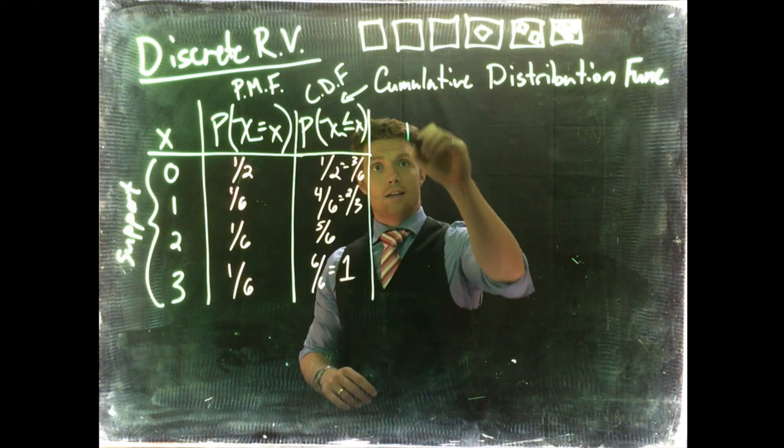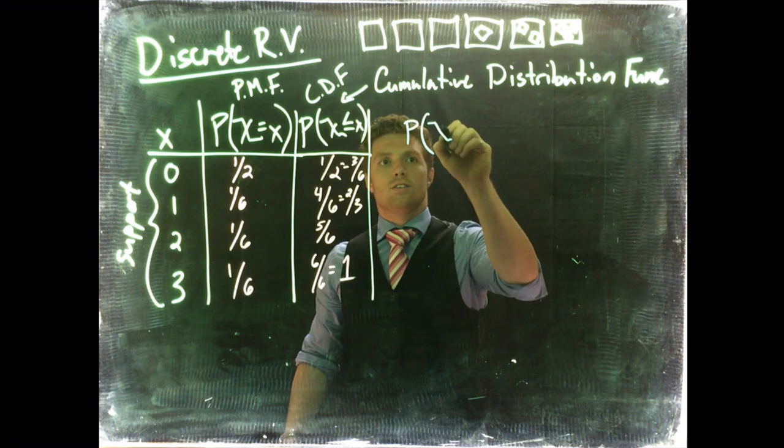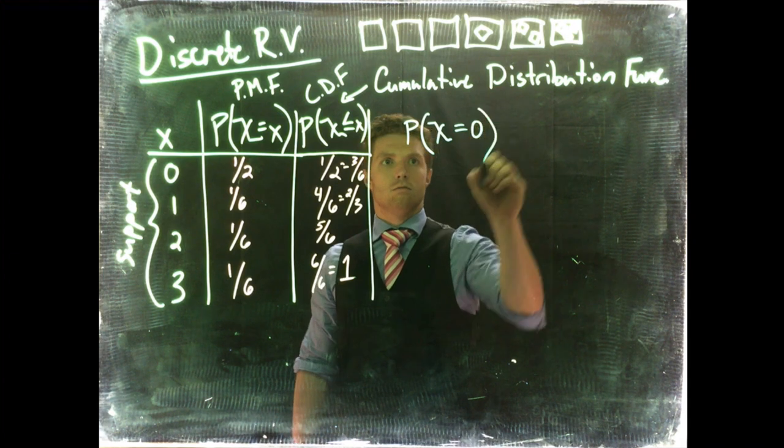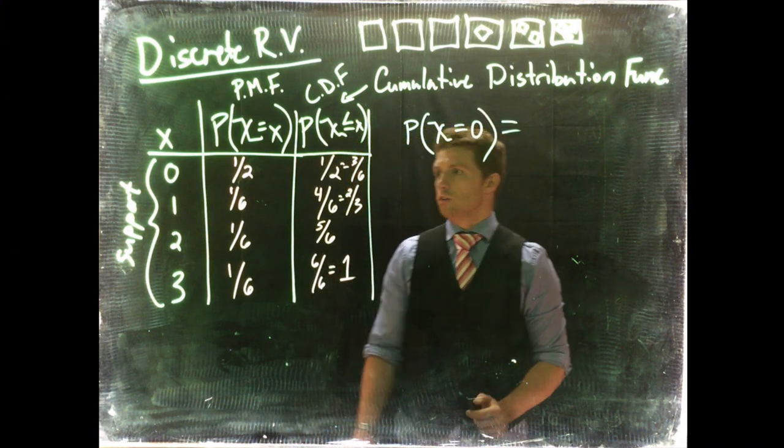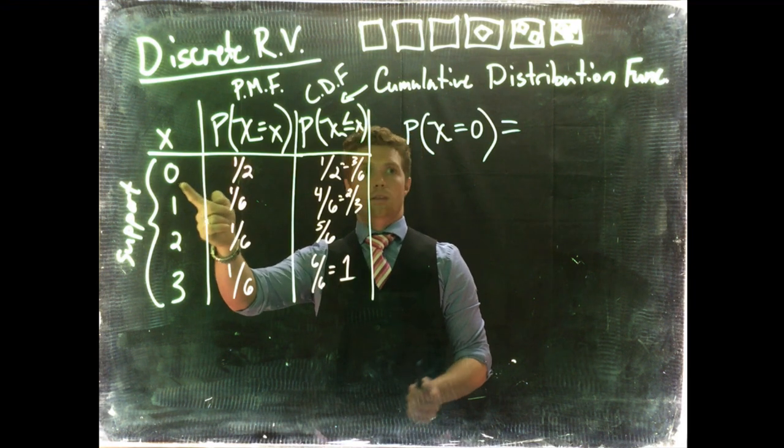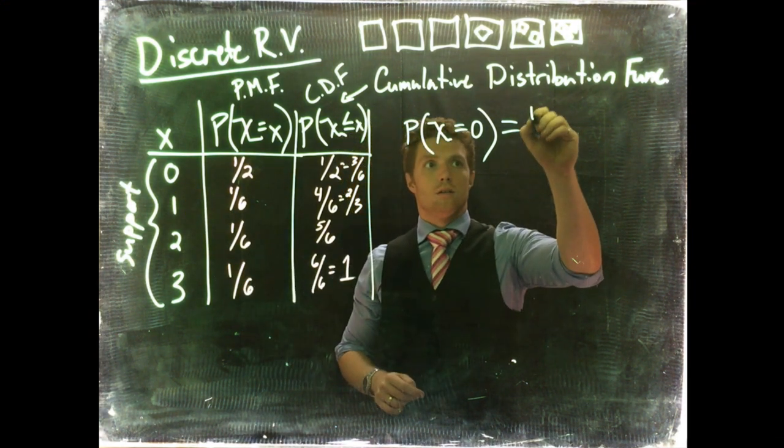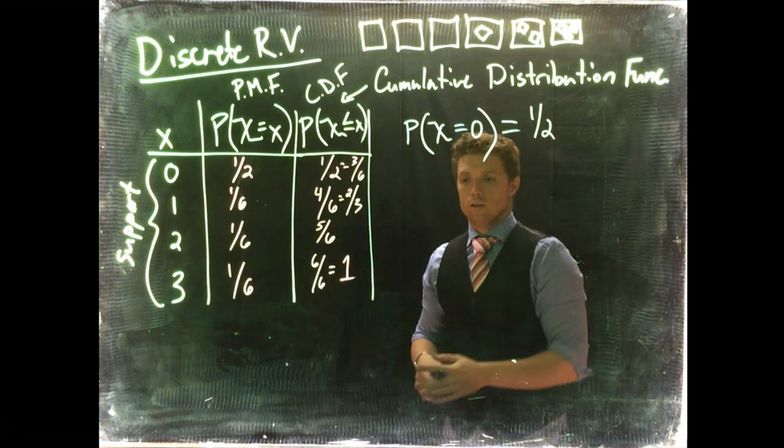So what if I just simply ask, what is the probability that X is going to equal 0? All right, so just reading this chart, we would very simply go over to where is X equaling 0? There it is. What's its associated probability? It would be 1 half. Okay, so that one should be super straightforward. Pretty simple.